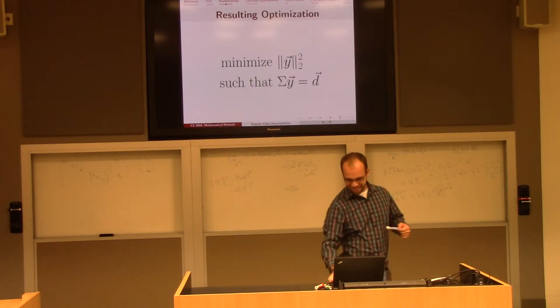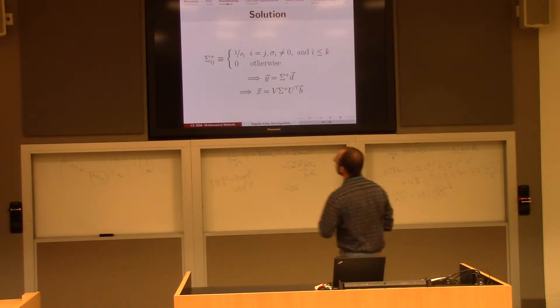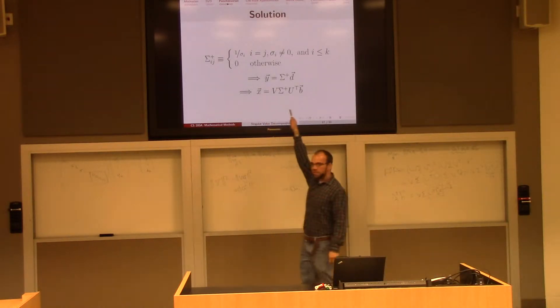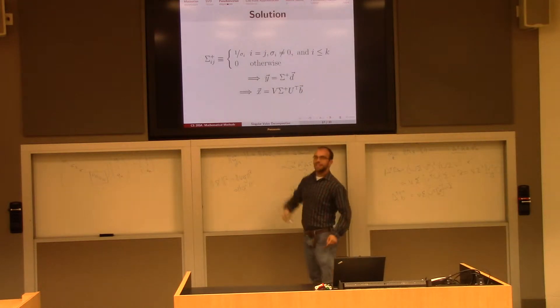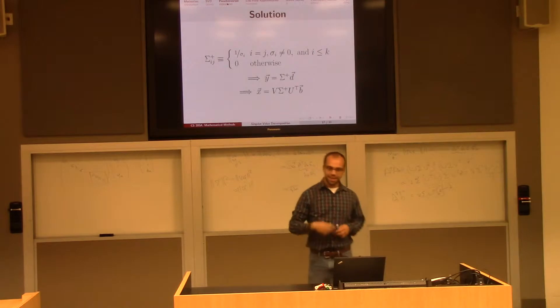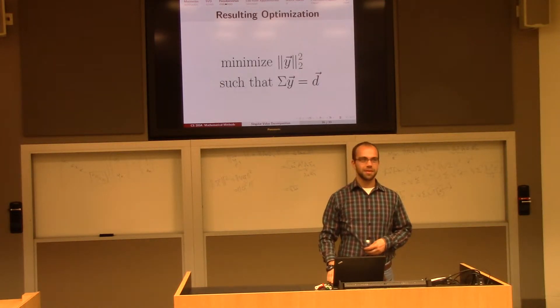This is tricky. So I can define sigma plus to the matrix of 1 over the sigma if it's non-zero, and just zero otherwise. And what I just showed you is this relationship here, that y is equal to sigma plus b. Hopefully you believe that that optimizes this energy here, or this optimization problem.